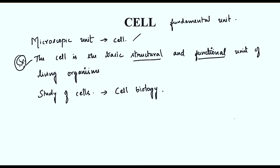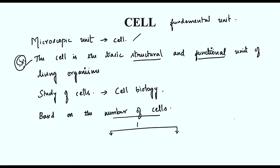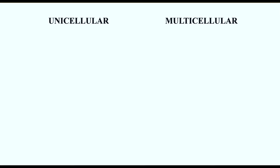Based on the number of cells, organisms are divided into two types: unicellular and multicellular. From the name itself, 'uni' means single and 'multi' means many. A unicellular organism has a single cell, but multicellular organisms consist of a large number of cells.